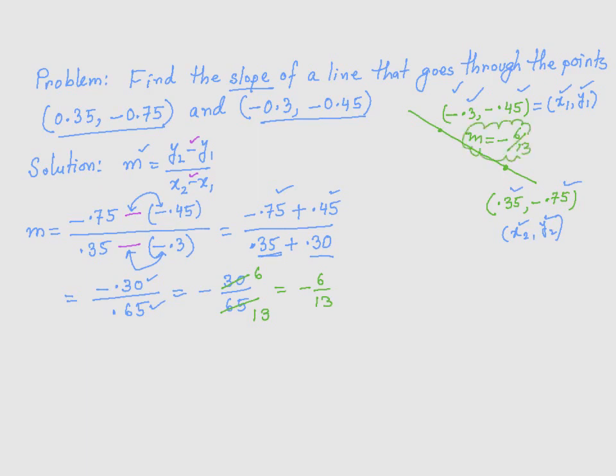This slope is negative. And it tells you that as you go from left to right on the graph, the line goes down. Also, in terms of rise over run, this is what it means. Negative 6 over 13 tells you if you move 13 units to the right, you are going to move 6 units down.